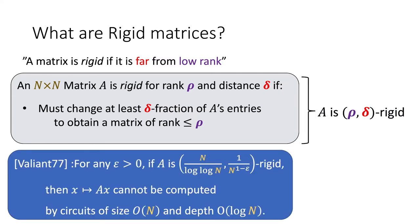Why do we care about rigid matrices? There are many reasons, but one really nice reason is that Valiant in the 70s showed that the linear transformation induced by a rigid matrix cannot be computed by linear size logarithmic depth circuits. This means that if you can construct a rigid matrix within some class, you get circuit lower bounds with respect to that class.